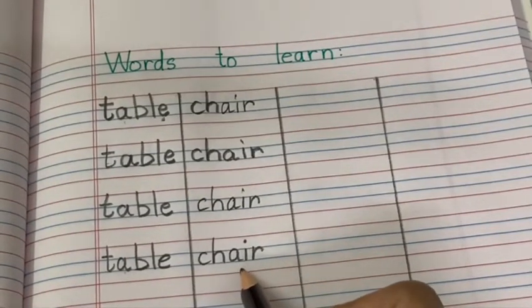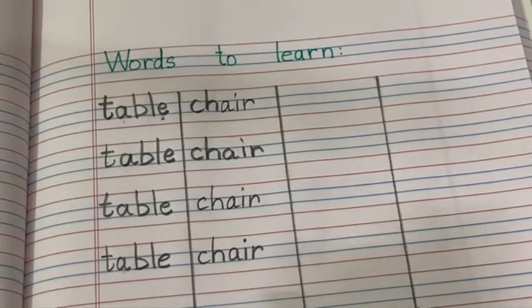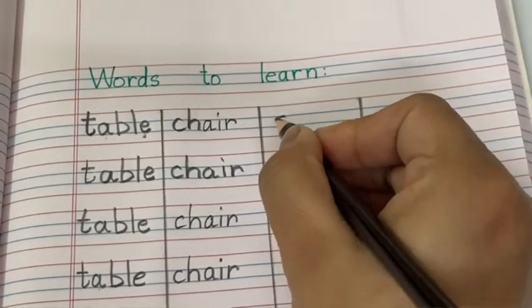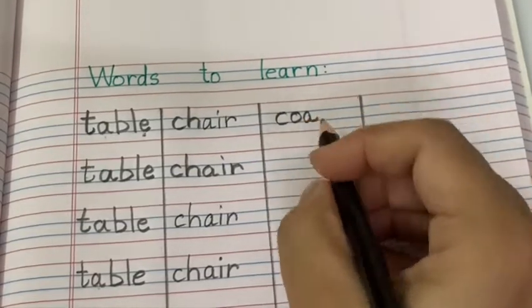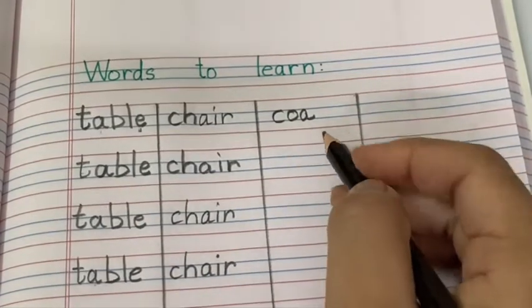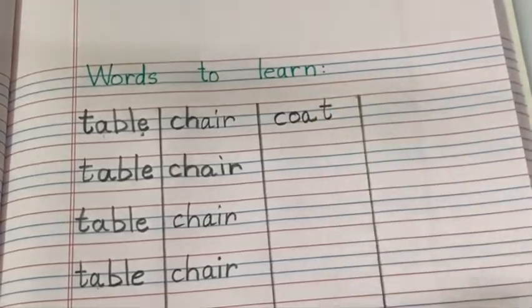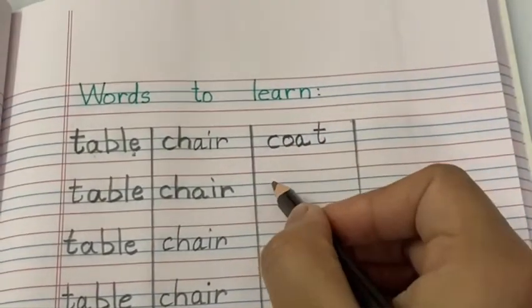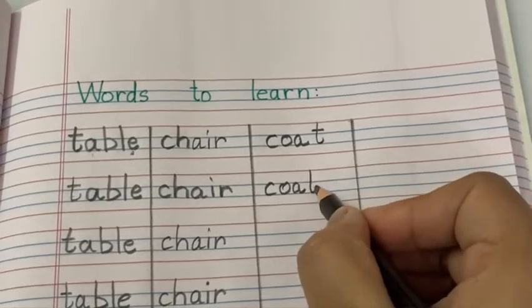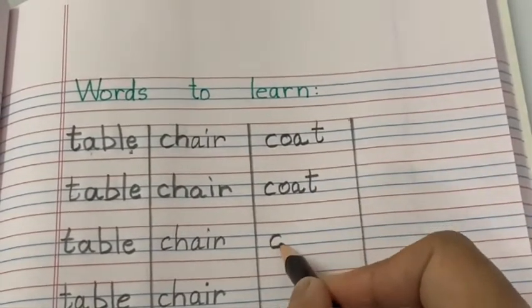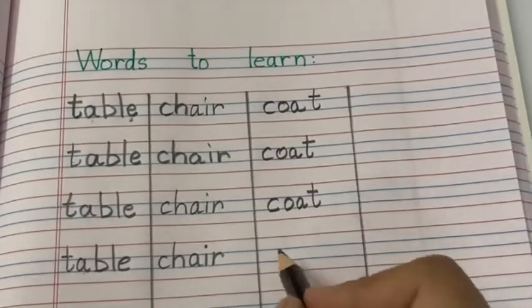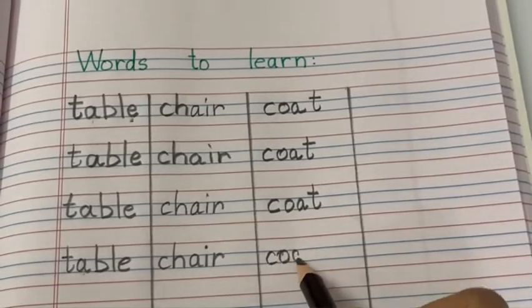Next word is coat. Coat. C-O-A-T. Children, O-A together - this is the long sound of vowel O, so we will say 'oh'. C-O-A-T. C says 'kuh', O-A together 'oh', T says 'tuh'. Coat. Coat. One more time: C says 'kuh', O-A together 'oh', T says 'tuh'. Coat.